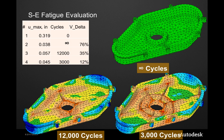On the other hand, design two on the upper right, where I just doubled the wall thickness, has an infinite life — which is over-designed given our performance specifications. In order to successfully take cost out of products, engineers must understand the trade-offs for performance and quality. This is a perfect example. The optimum design is somewhere between designs three and four on the bottom.